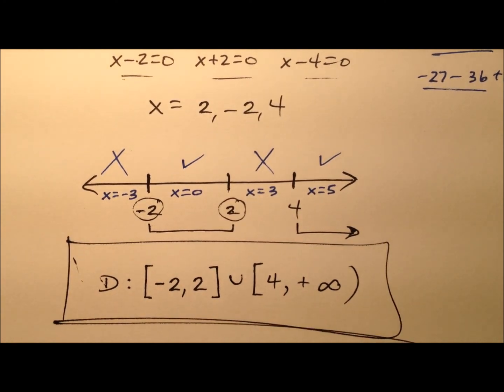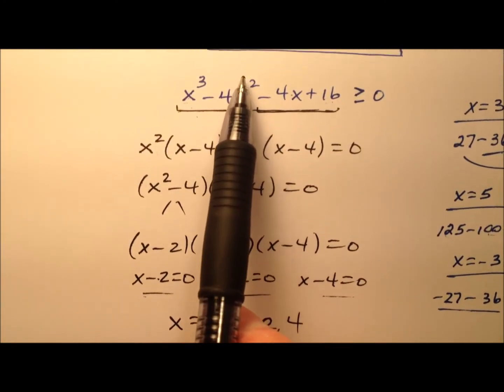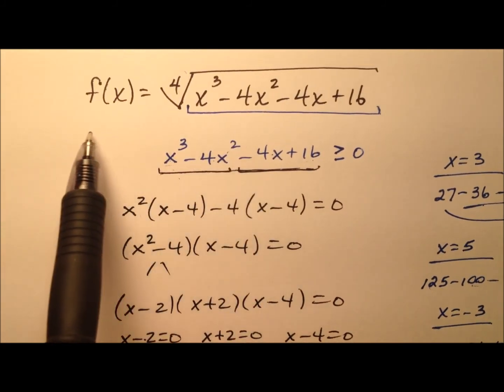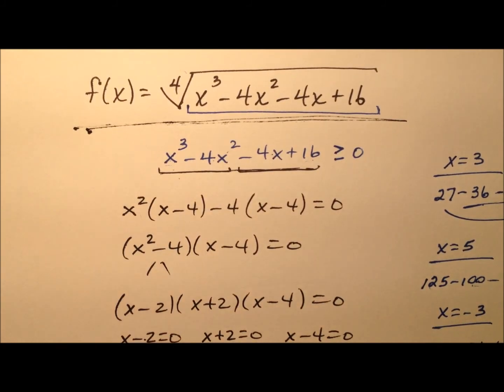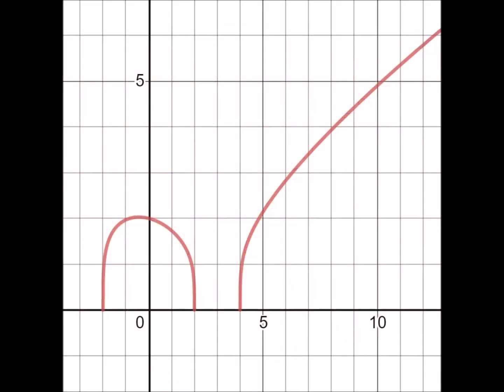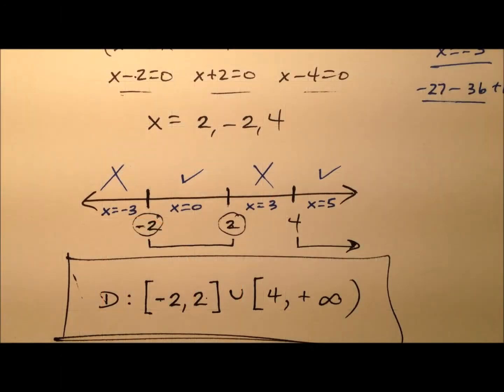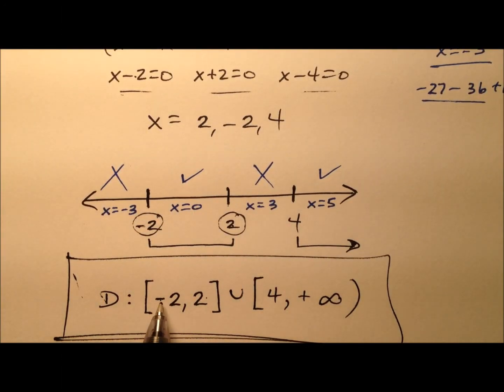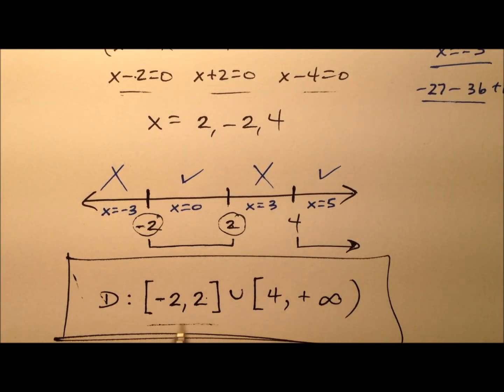And let's go ahead and take a look at the graph and just kind of verify that that indeed is the domain. So based on the graph we just saw, from negative 2 to 2 is being used in the x values, and from 4 up to infinity is being used. So we can kind of verify that our answer is correct by looking at the graph.